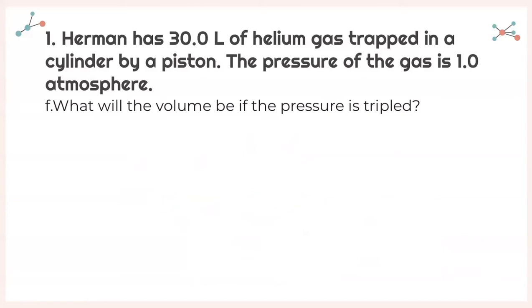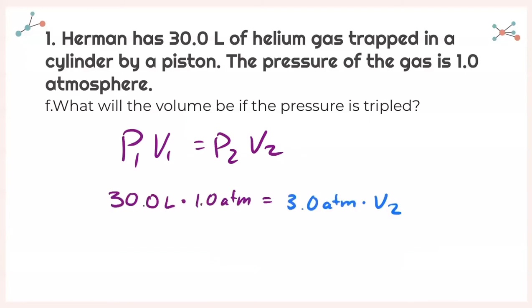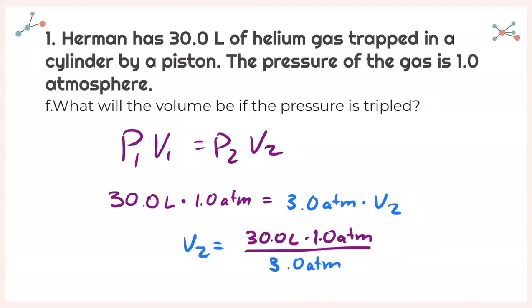Next, what will the volume be if the pressure is tripled? We are solving for volume. Same equation: P1 times V1 equals P2 times V2. My pressure is tripled, so instead of 1 atmosphere, it's 3 atmospheres. V2 equals 30.0 liters times 1.0 atmospheres divided by 3.0 atmospheres, giving a volume of 10.0 liters.